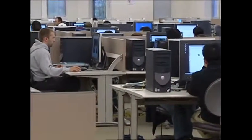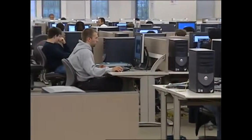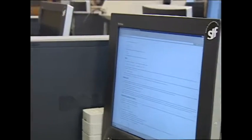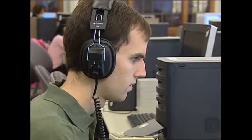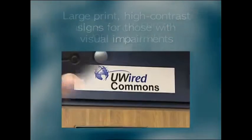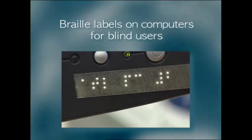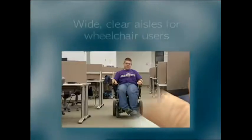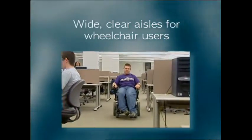Now for the lab itself. Look at the physical details for users — remember that people with various abilities will be using the room. For example: large print, high contrast signs for those with visual impairments; braille labels on computers for blind users; and wide, clear aisles for wheelchair users. We really try to focus on making wide and open pathways from our access points, particularly for students with physical disabilities.